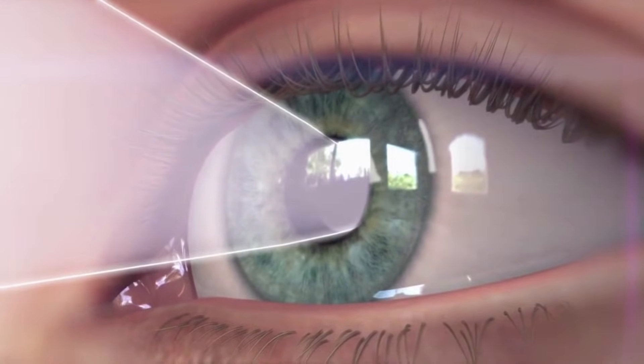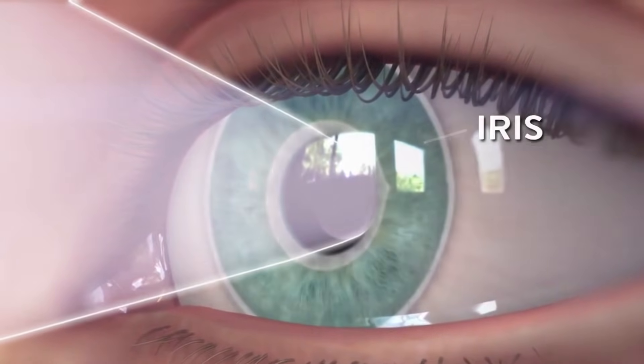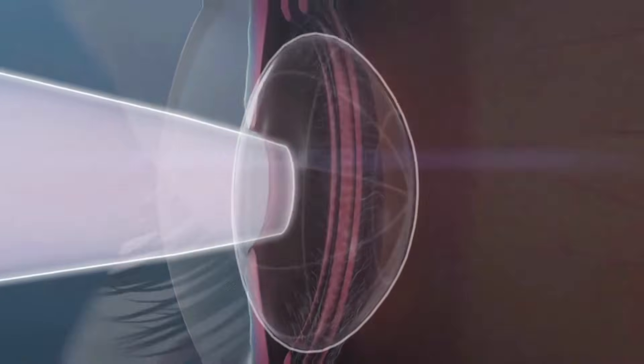The iris, which is a flat, colored, ring-shaped membrane behind the cornea of the eyes, may dilate or constrict to determine how much light gets to the lens.